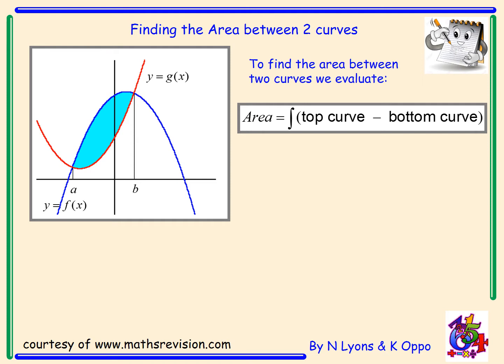In this example here, we've got the blue curve as the top curve, that's y equals f(x), and the red curve as the bottom curve, it's the function y equals g(x). Our limits are the points of intersection from point a to point b. So we can write that as: area equals the integral from a to b of f(x) minus g(x) with respect to x.